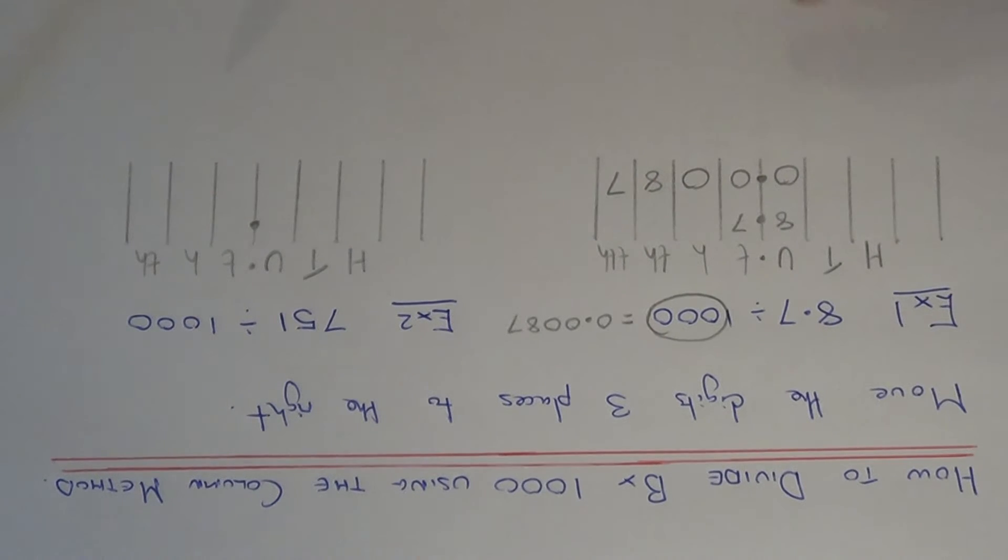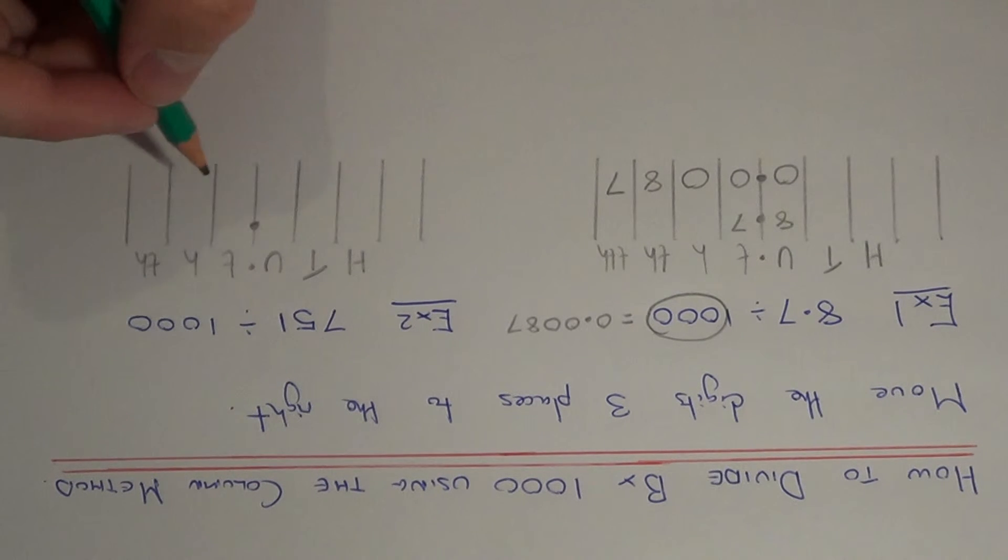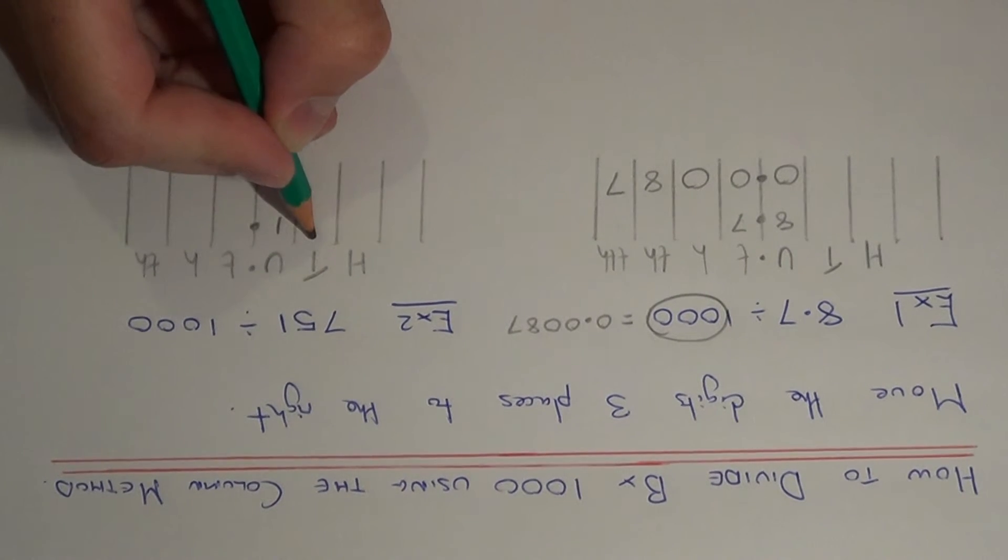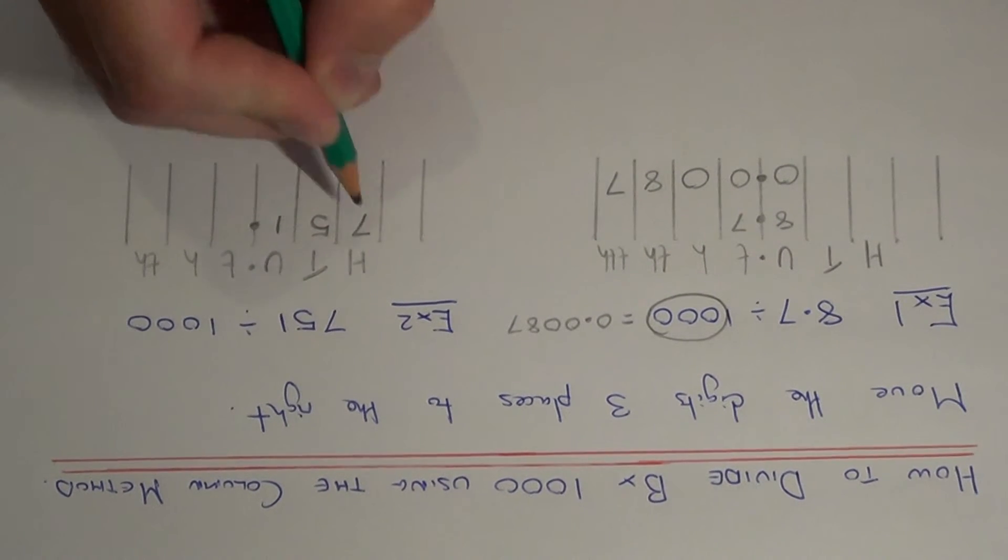So let's have a look at example 2 then. So this time we have a whole number which we need to divide by a thousand. So it's 751 divided by a thousand. So we have one unit, we have five tens and we have seven hundreds.